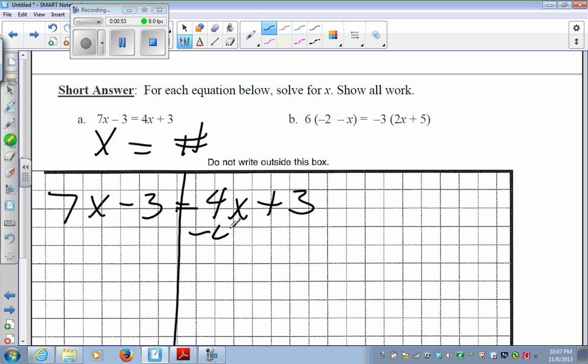To get rid of that 4x, I'm going to take away a 4x, which is going to cancel. I take 4x away from this side, so I've got to take 4x away from that side. 7x minus 4x is 3x. Bring down my 3, because remember, 3x and 3 are not like terms, so they cannot be put together.